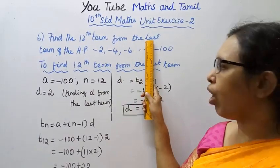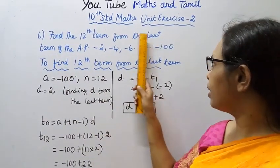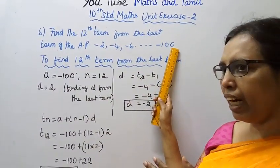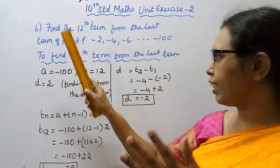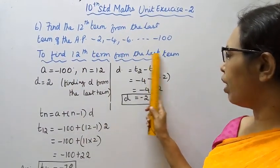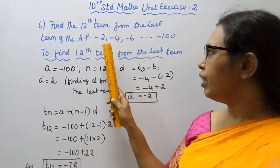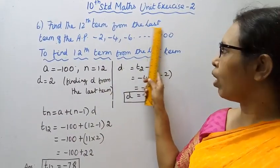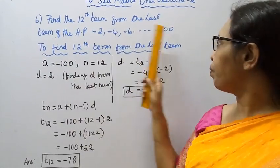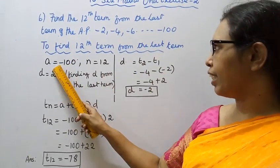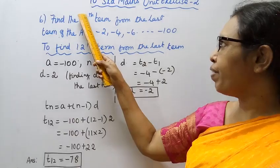Starting from the last term which is -100, we find the 12th term from the last. When finding from the last term, a will be -100, not -2. The last term -100 becomes our starting point, and n will be 12.